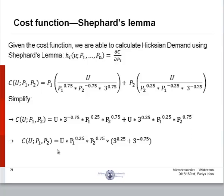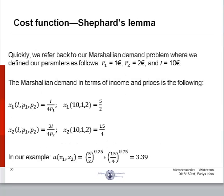You'll find that it all adds up. And then we have this right here, our cost function. Now, we've simplified our cost function. We're going to go a step further. Before moving on, let us quickly refer back to our Marshallian demand problem, where we defined our parameters as follows. P1 equals 1 euro, P2 equals 2 euro, and I equals 10 euro.